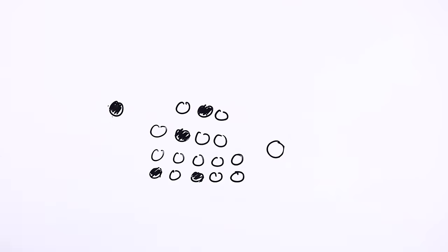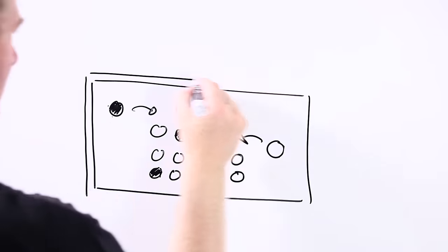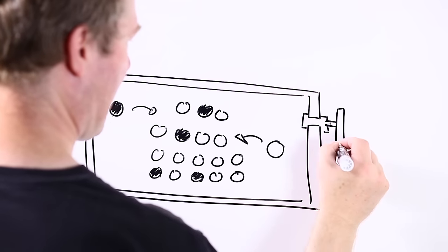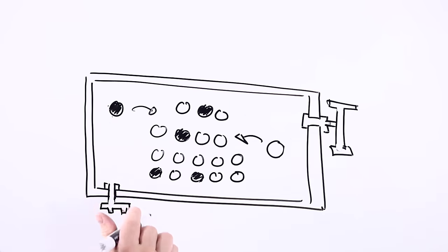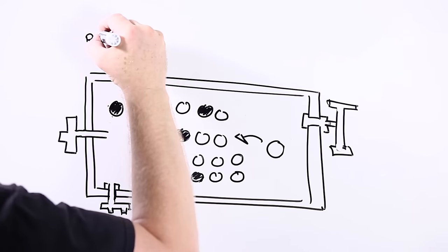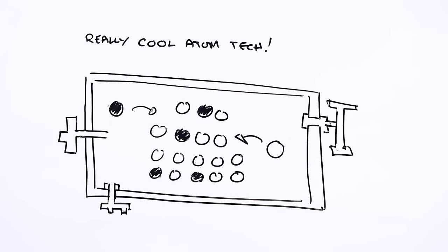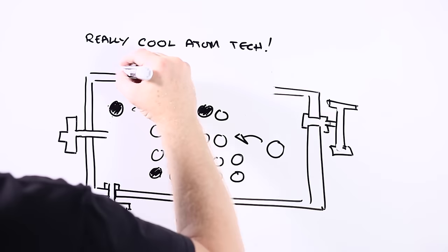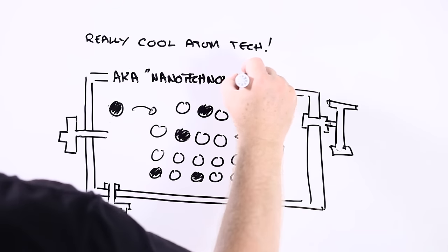But over the past few years, scientists and engineers have become increasingly good at designing and engineering materials down at the level of atoms or small groups of atoms. And because this new technology involved doing stuff at such a minute scale, it's called nanotechnology.